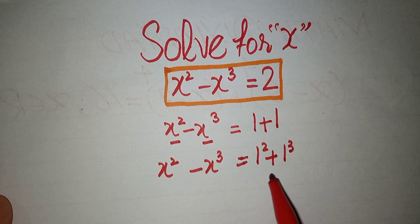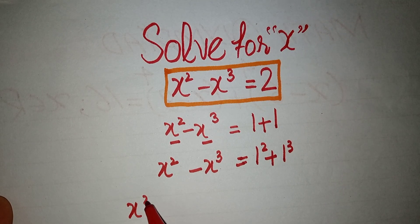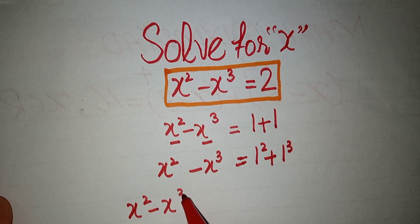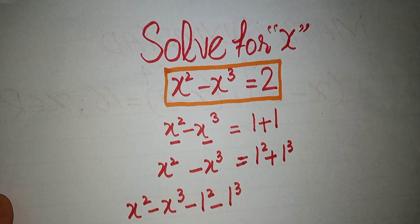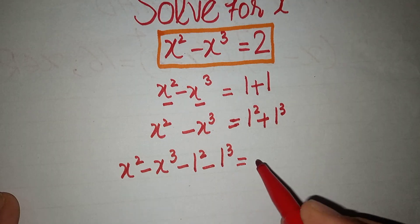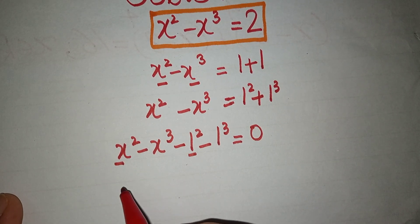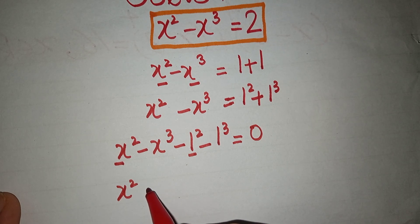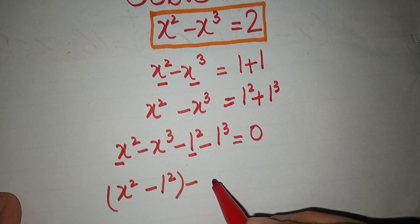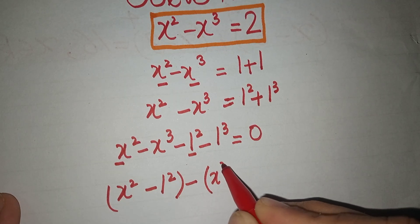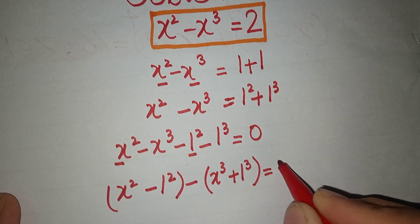Now we take all these terms to the left side, such as x squared minus x cubed minus 1 squared minus 1 cubed is equal to 0. We then regroup using the square formula: x squared minus 1 squared minus x cubed plus 1 cubed is equal to 0.